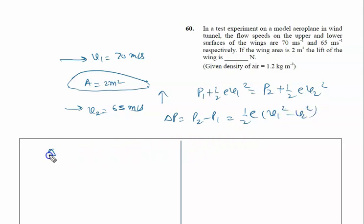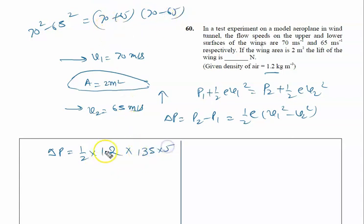Delta P is written as ½ × ρ, where ρ is 1.2 kg/m³. Then V₁² - V₂² is 70² - 65². Using the formula A² - B² = (A+B)(A-B), this becomes 135 × 5 divided by 10.